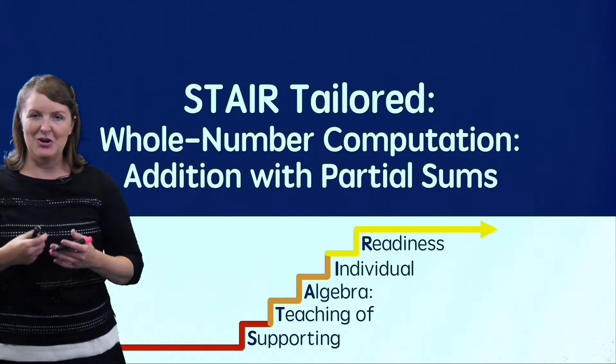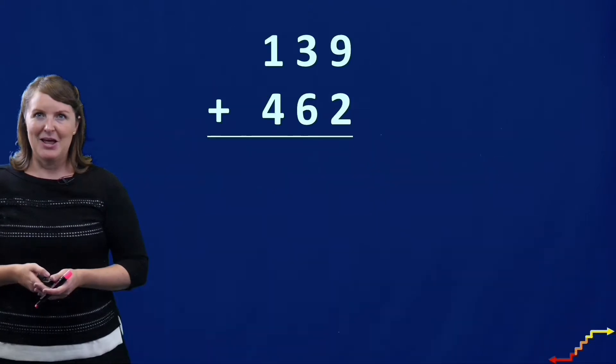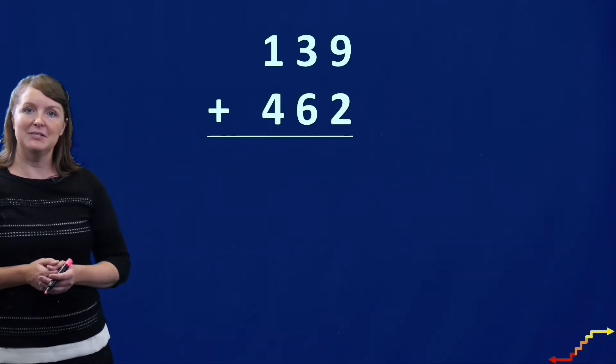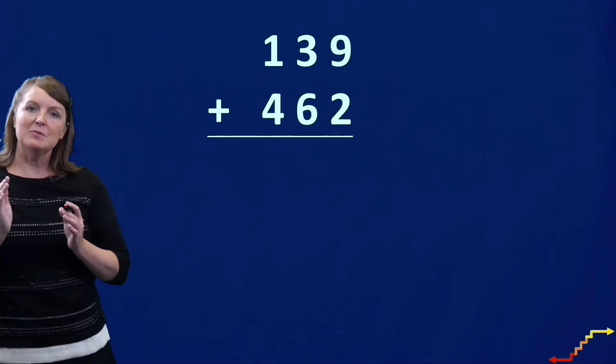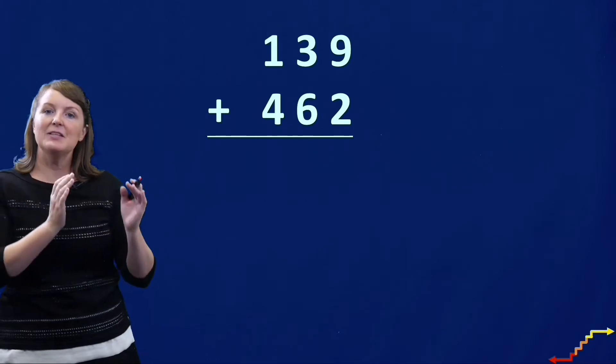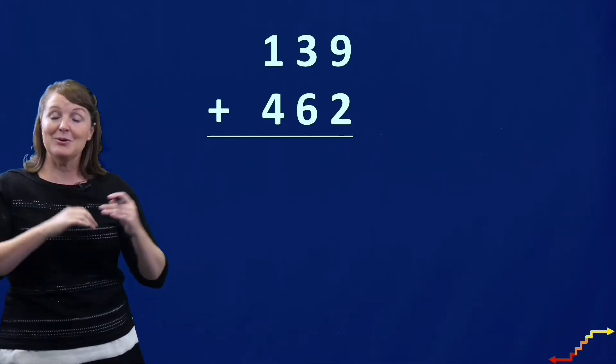And we're going to look at how we can do addition with the partial sums model. So here I have a problem 139 plus 462. With the partial sums model, we are going to work from left to right. So we are going to add the hundreds, then the tens, then the ones. So let's go ahead and get started.